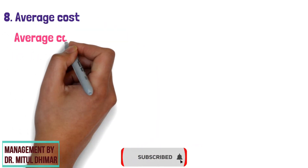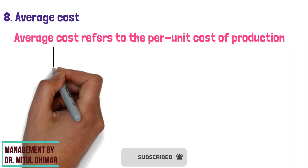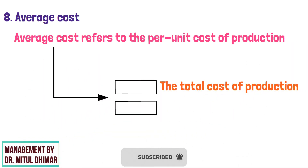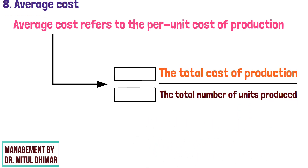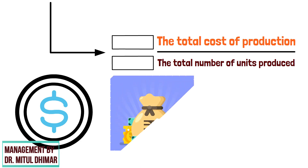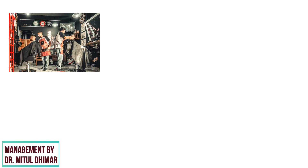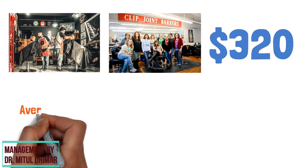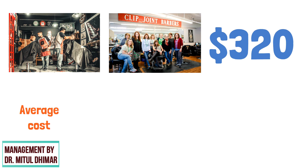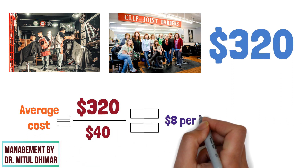Number 8: Average Cost. Average Cost refers to the per unit cost of production, which is calculated by dividing the total cost of production by the total number of units produced. In other words, it measures the amount of money that the business has to spend to produce each unit of output. For example, since the total cost of producing 40 haircuts at the clip joint is $320, the average cost for each of the 40 haircuts is $320 divided by 40, that is $8 per haircut.